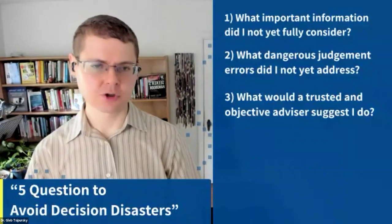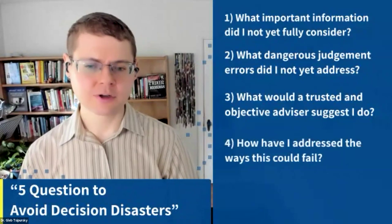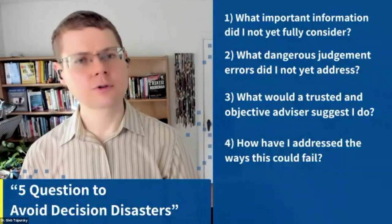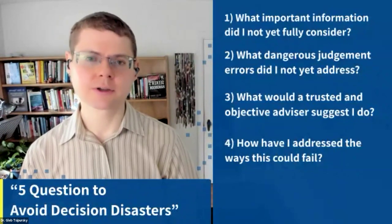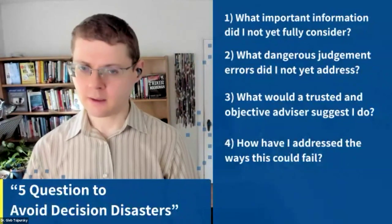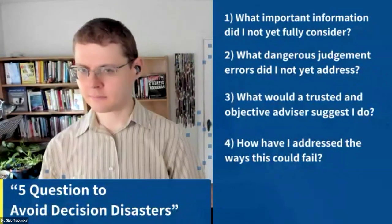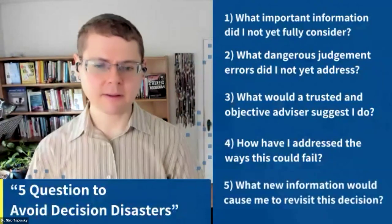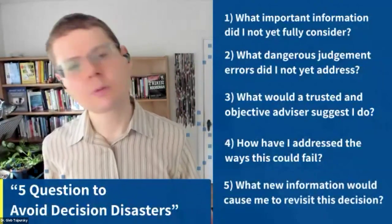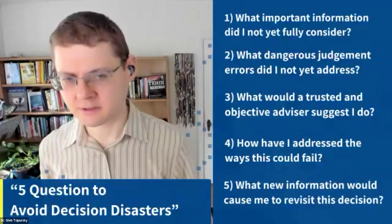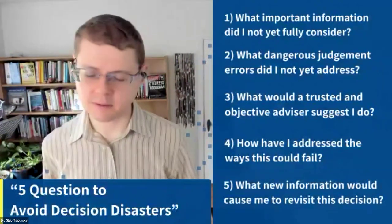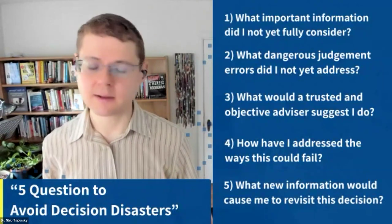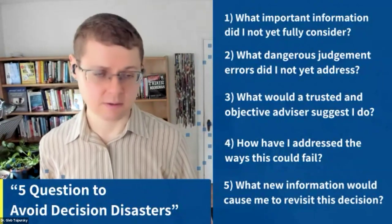The first three questions have to do with making the decision. But if you don't implement the decision well, you're not really going to have a good outcome. The fourth question: how have I addressed all the ways the decision can fail? Think about how you can address all the problems — fix the problems in advance. And finally, the fifth question: what new information would cause me to revisit this decision? What would cause you to change your mind? We tend to be stuck with a decision after we make it, but if we decide in advance what would cause us to change it, that's going to be very helpful to avoid being locked in.